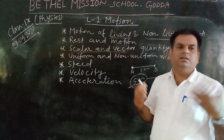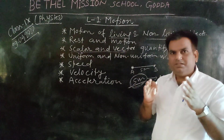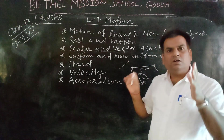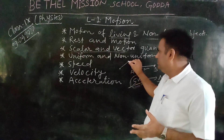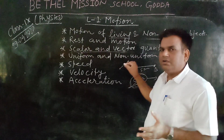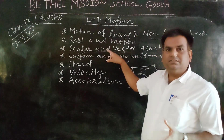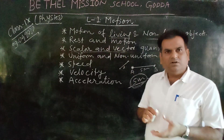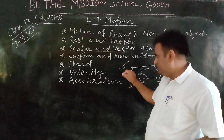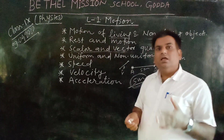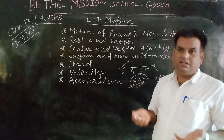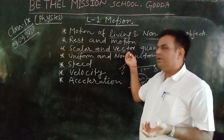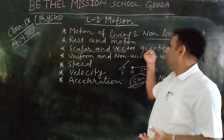Examples of vector quantity include displacement — displacement means the shortest distance between two points. Displacement is a vector quantity. Force is also a vector quantity. Velocity is a vector quantity. Acceleration is a vector quantity. These are the physical quantities which are vector quantities.